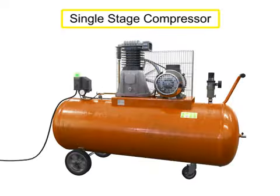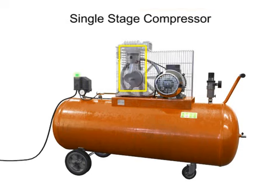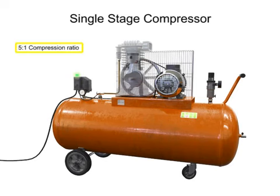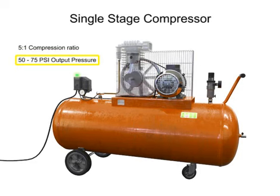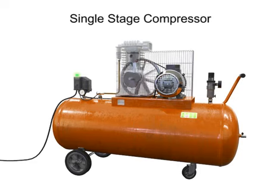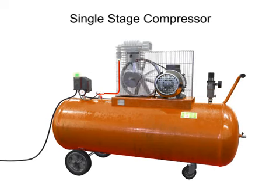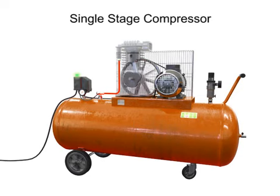This is a single-stage compressor. It has only one piston and cylinder, and compresses the air in only one stage. A single-stage compressor typically has a compression ratio of 5 to 1, with an output pressure of about 50 to 75 PSI. As air is compressed, it becomes increasingly hot. If the air becomes too hot, not only is the compression cycle less efficient, but there is the hazard of an explosion if any hydrocarbon material, such as oil or lubricant, comes into contact with the overheated air.